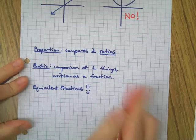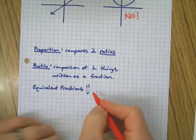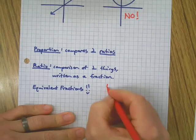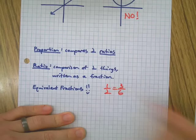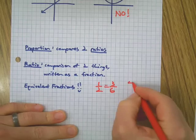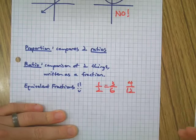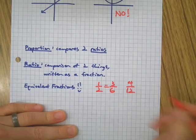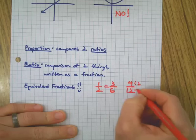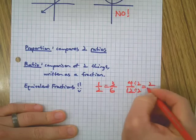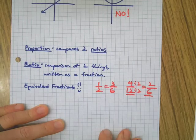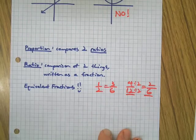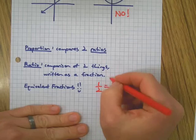What would that look like? Well, think of equivalent fractions. For example, one half equals three sixths, or sometimes when you're simplifying fractions, for example, if you had four twelfths and you divided both things, cut them in half, and you get two sixths. For example, that's what a ratio. Each fraction is a ratio, and when I compare them together, it's a proportion.